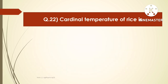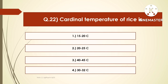The next question is: the cardinal temperature of rice is — options are 15-20°C, 20-25°C, 40-45°C, or 30-32°C. The right answer is 30-32°C. The cardinal temperature is the summation of maximum plus minimum plus optimum temperature. It is known as cardinal temperature.